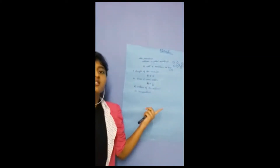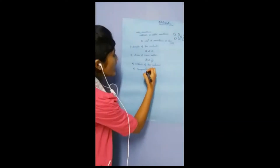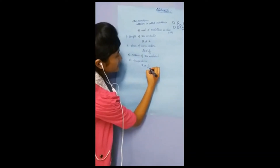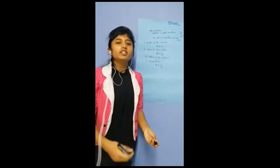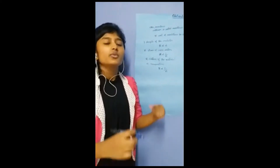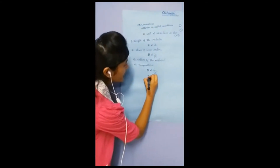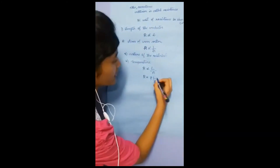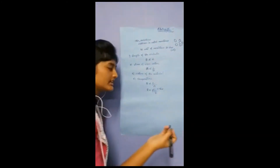These are the four factors affecting resistance. From length and area, we understand that resistance is directly proportional to length and inversely proportional to area of cross section. To remove this proportionality sign, we replace it with a constant. That constant is rho (ρ), and in simple words, it is called resistivity.